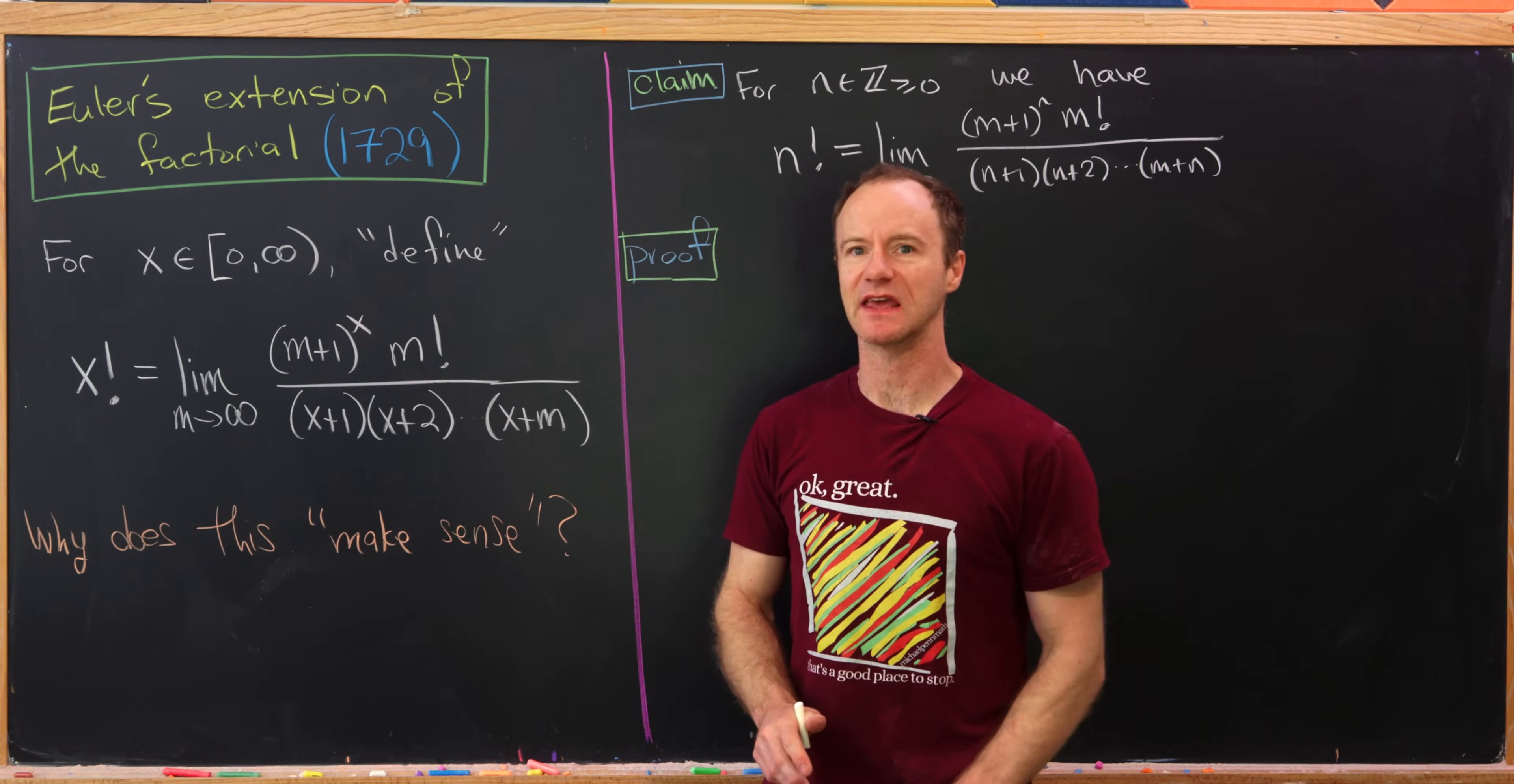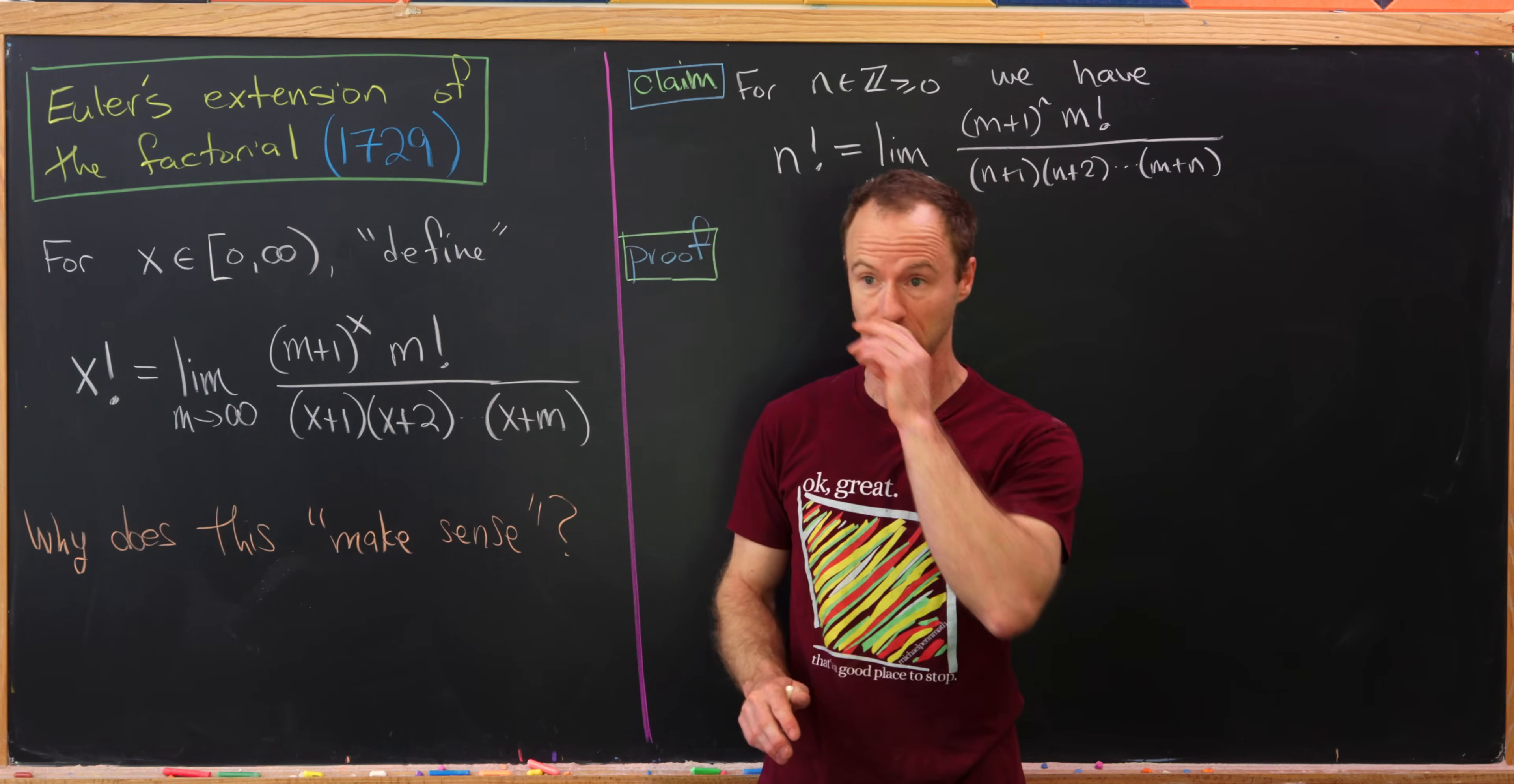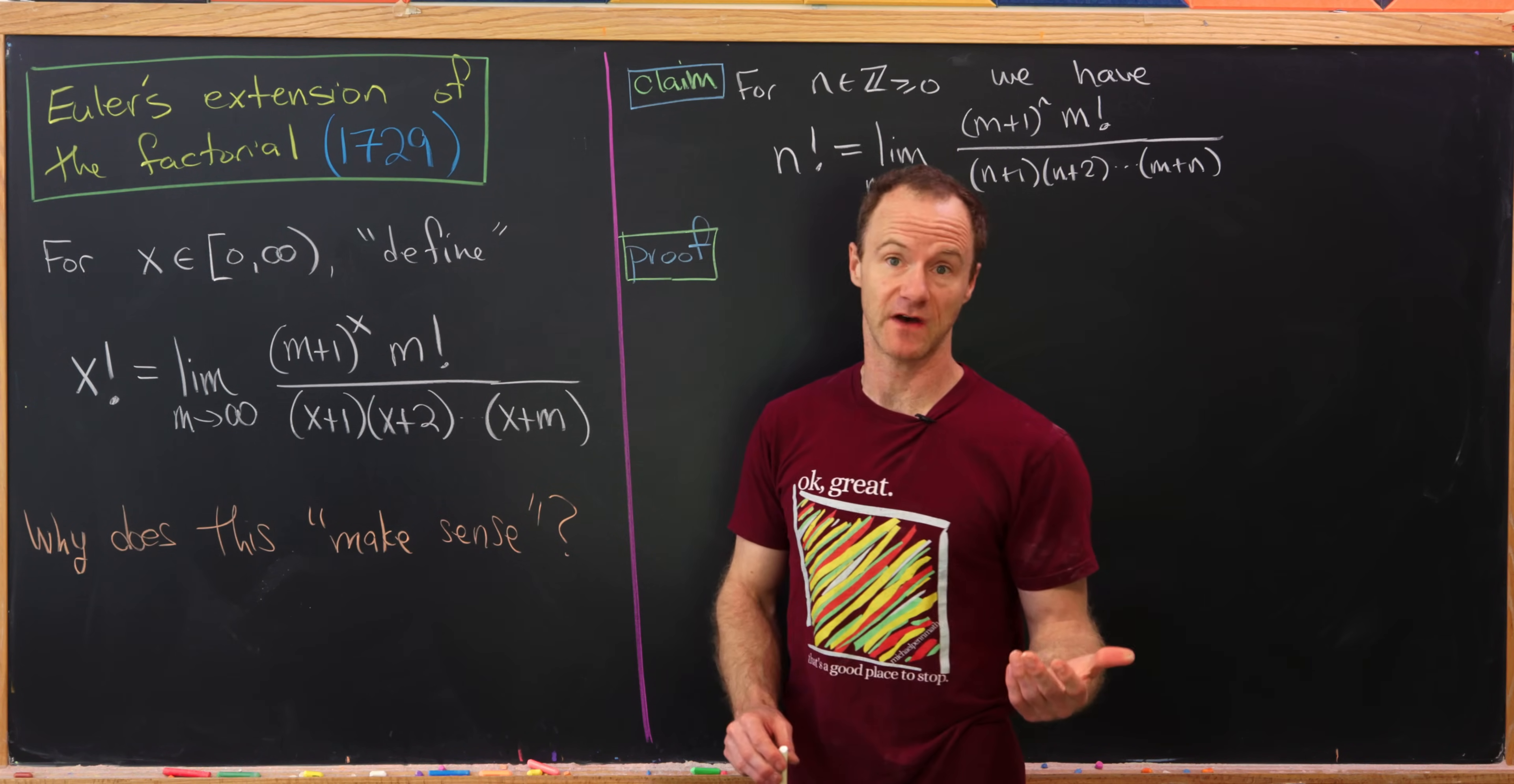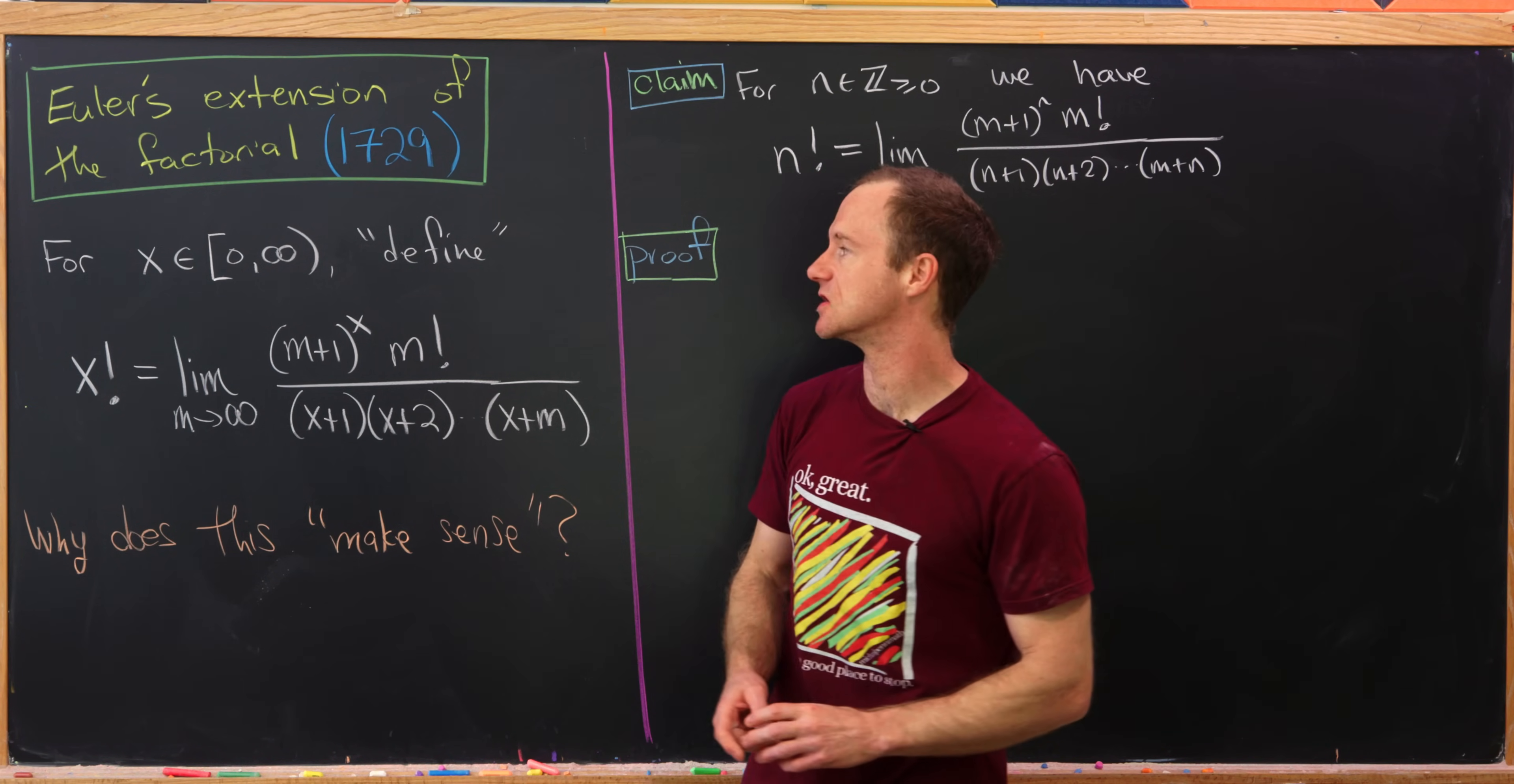But in fact the gamma function was not the first extension of the factorial past non-negative integers. The famous Euler indeed had his own extension of the factorial and it's dated to a letter that he wrote in 1729.